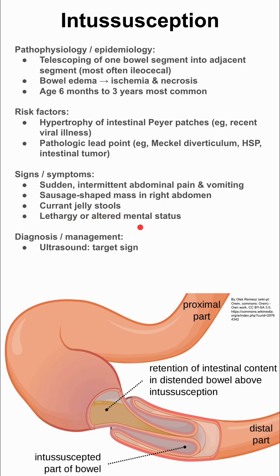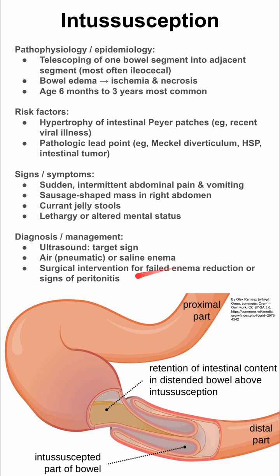To treat this, you first want to start with an ultrasound where you see a target lesion. You can then do an air enema, also called a pneumatic enema, or a saline enema, and that can be both diagnostic and therapeutic. Lastly, in severe cases, you want to do surgical intervention for a failed enema reduction or for signs of abdominal peritonitis.